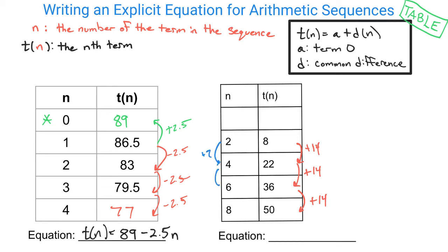So our common difference is really always talking about the common difference for every 1 n that you're going up from one term to the next. So that means in this scenario that our d value is going to equal a positive 7, because 14 divided by 2 equals 7.